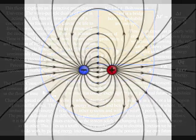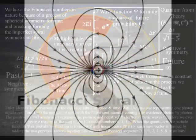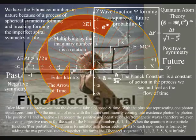The positive 1 and the negative 1 represents the positive and negative of electromagnetic waves. Therefore, we even have an objective reason for the start of the Fibonacci numbers: 0, 1, 1.